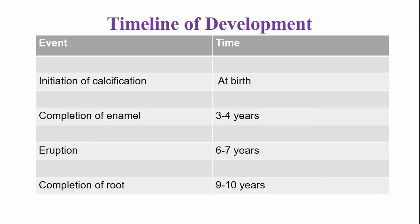The timeline or chronology of development of this tooth: calcification begins at birth. Completion of enamel is around the age of three to four years, and the tooth emerges into the oral cavity when the child is six to seven years old. The root is completed by the age of nine to ten years.